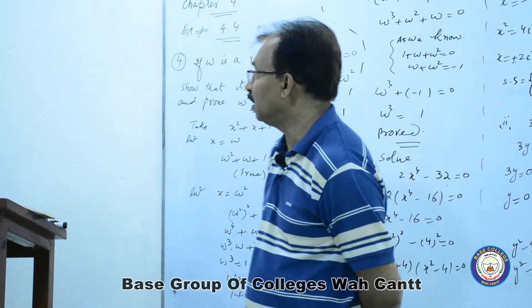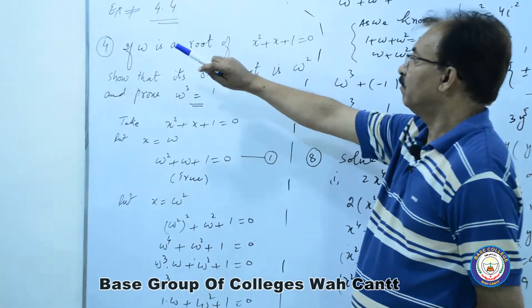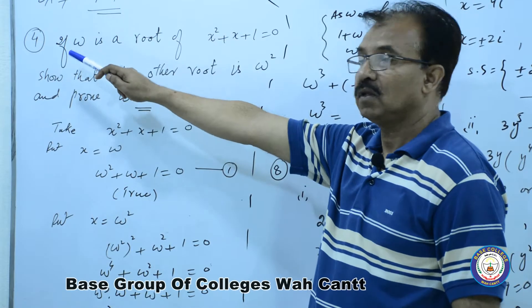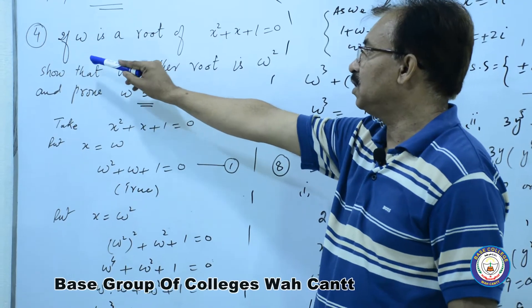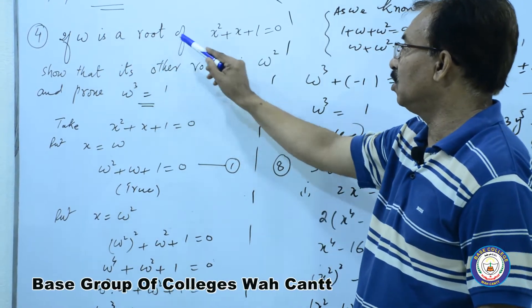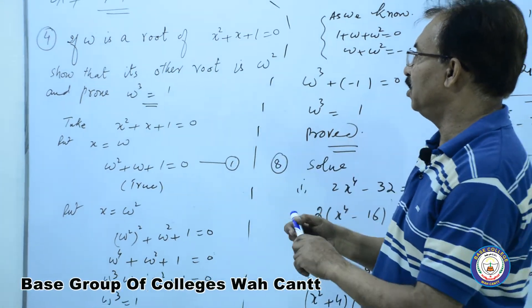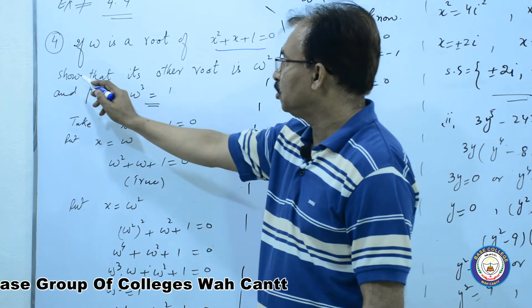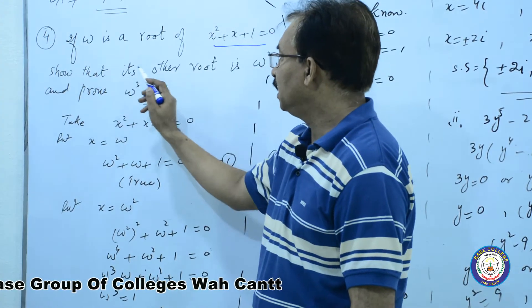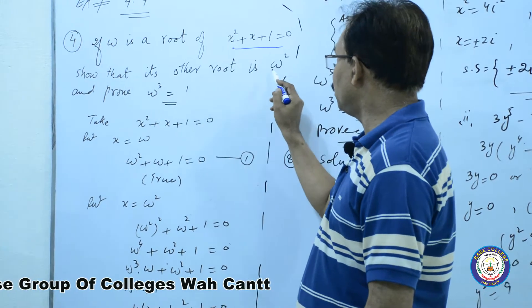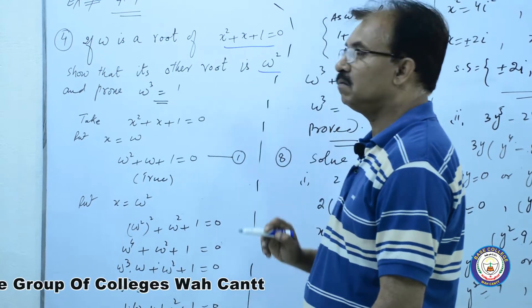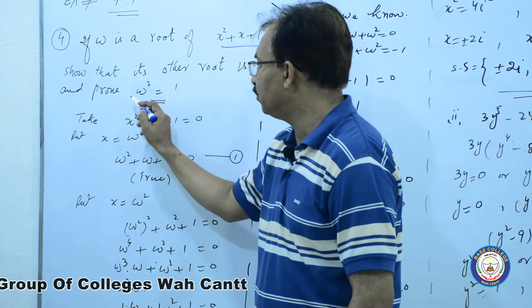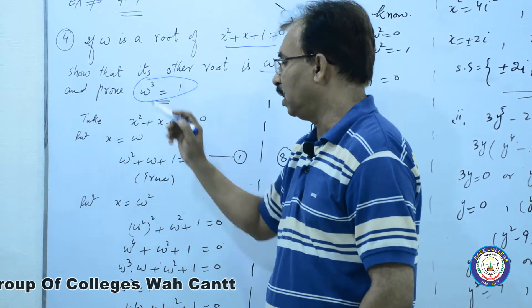Question number 4, exercise 4.4: If omega is a root of this equation, show that its other root is omega square, and prove that omega cube is equal to 1.